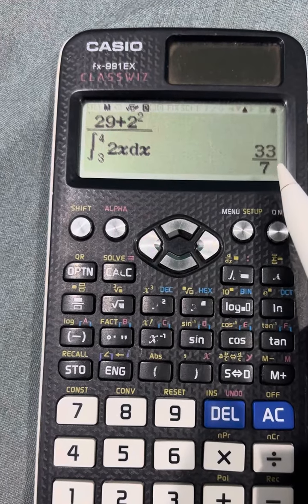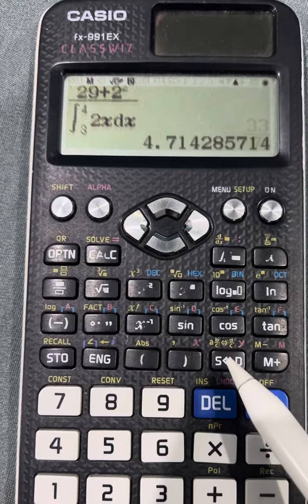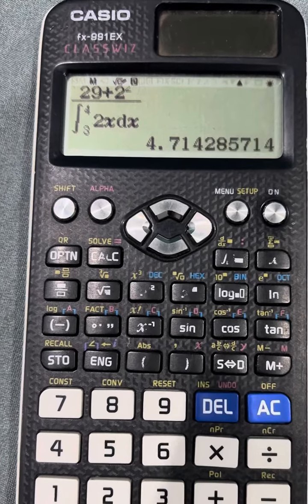If it is in this fraction, 32 by 7, you need not calculate it separately. Press this symbol and it will give you the answer in decimals.